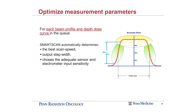For each beam profile and depth-dose curve in the queue, SmartScan automatically determines the best scan speed, the best output step width, and it chooses the adequate sensor and electrometer input sensitivity. This is something I have gone into my clinic and set up manually for each type of scan, but SmartScan does it automatically. It becomes more efficient and will give you higher quality data if you let it select the parameters.